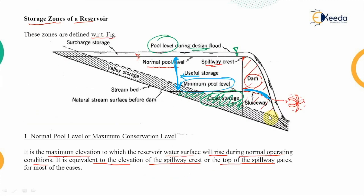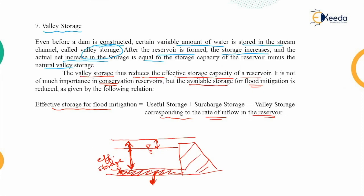In the figure, the shaded minimum level represents the depth of water always available in the stream above the stream bed — that is, the natural stream surface before construction of the dam. This completes the discussion regarding the different storage zones of a reservoir. In the next video we will look at reservoir sedimentation and the measures to control it.